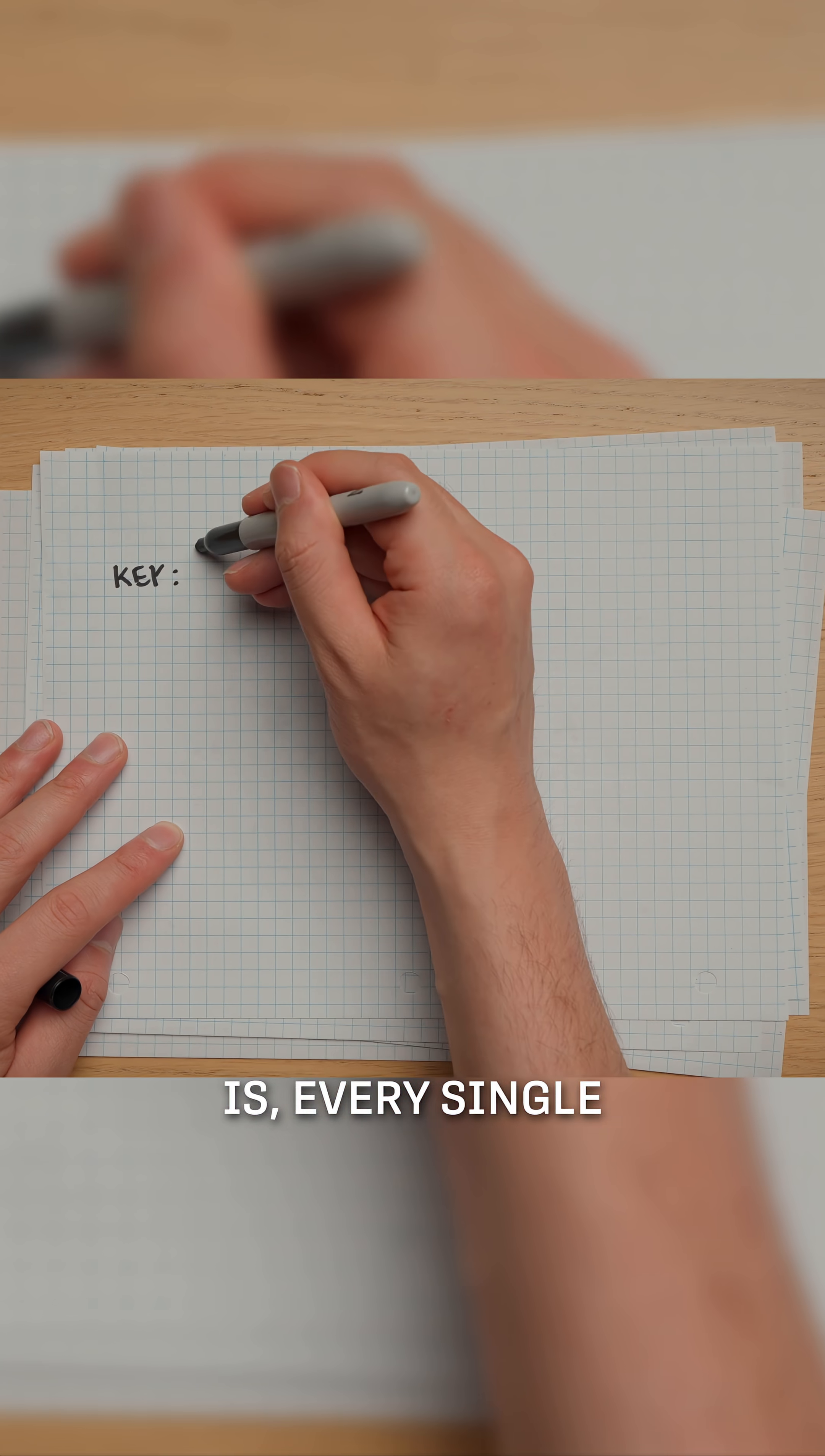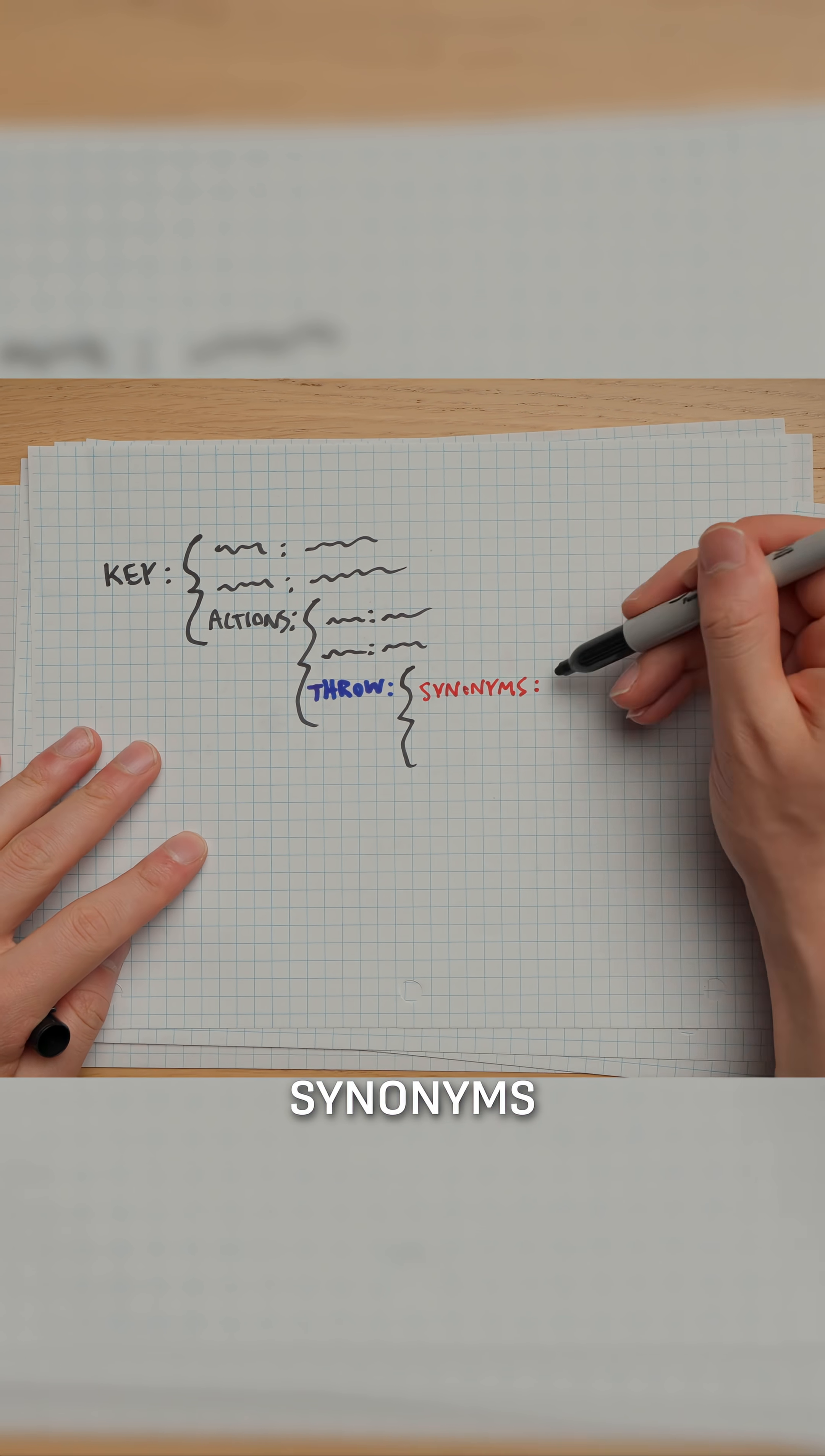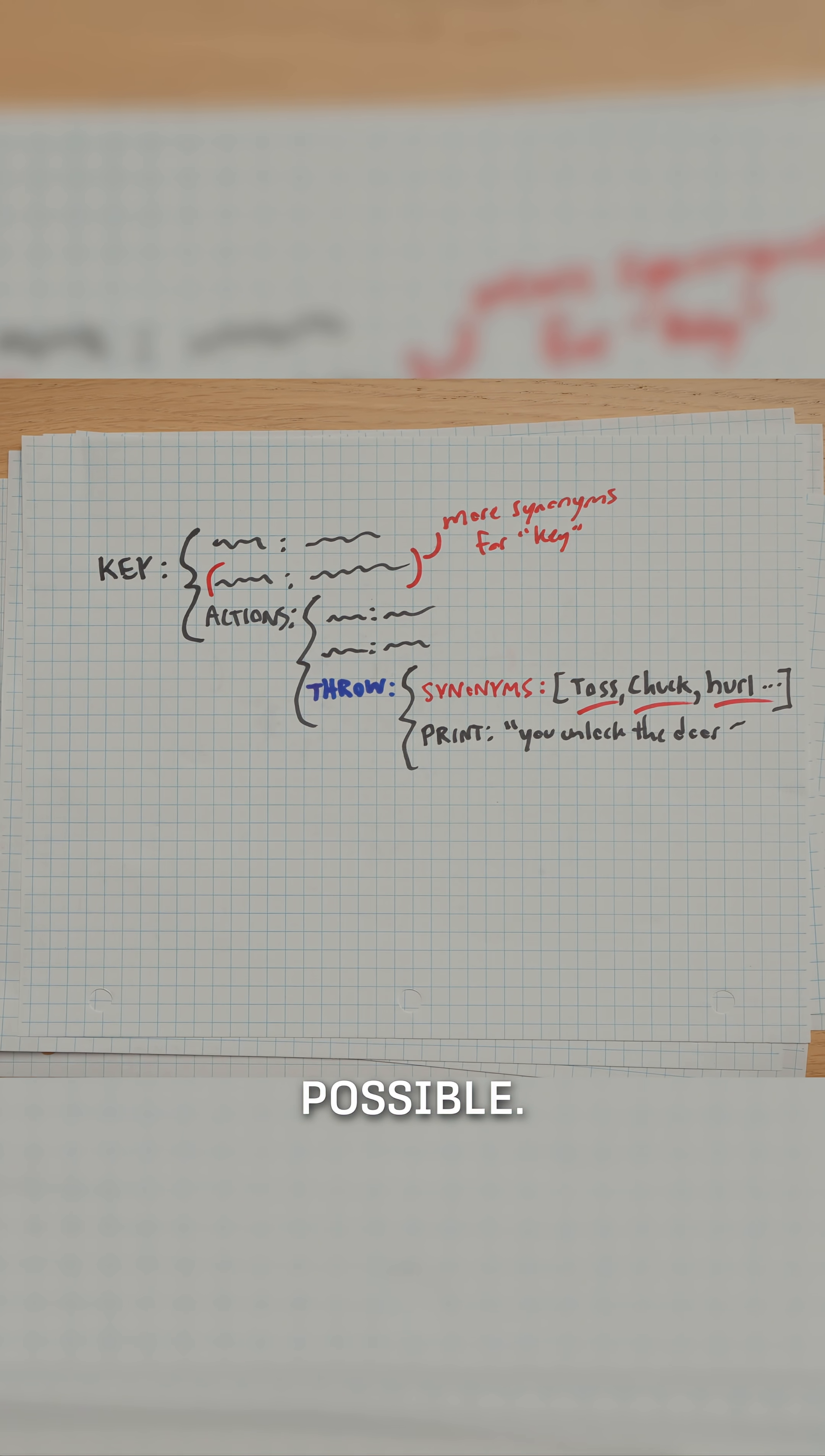The cherry on top is every single action and object in Zork is also stored with a list of its synonyms to make sure the computer recognizes as wide a range of inputs as possible.